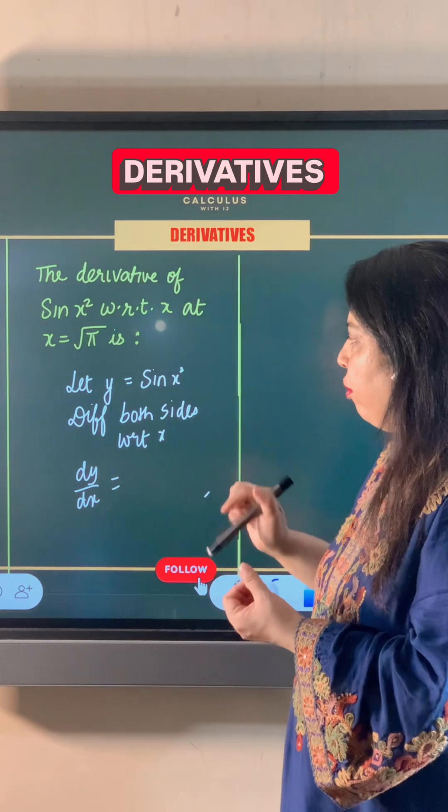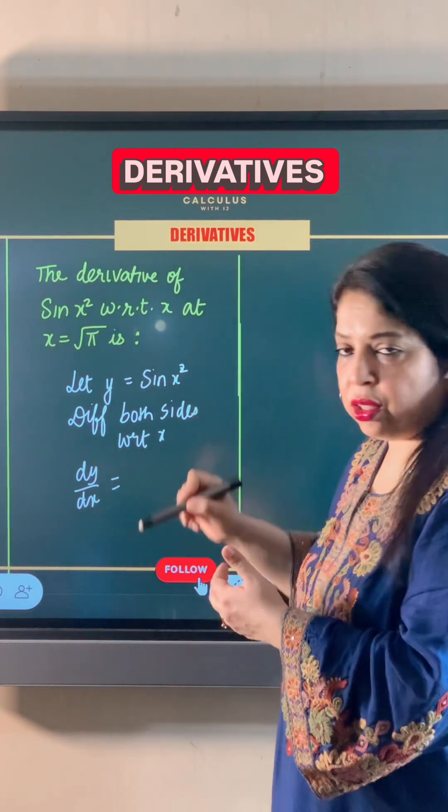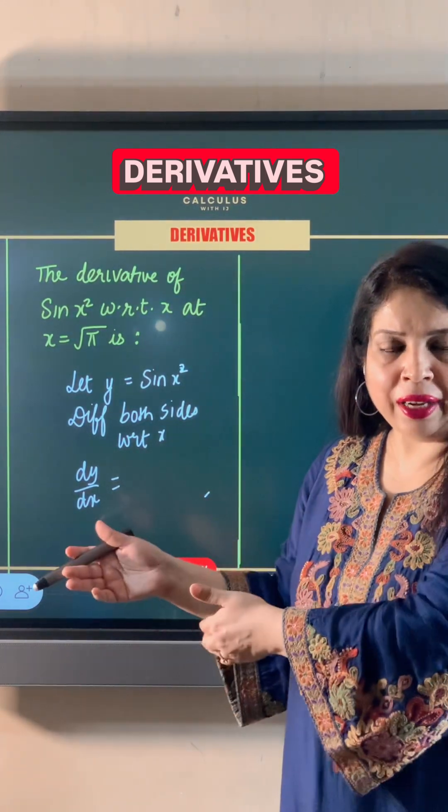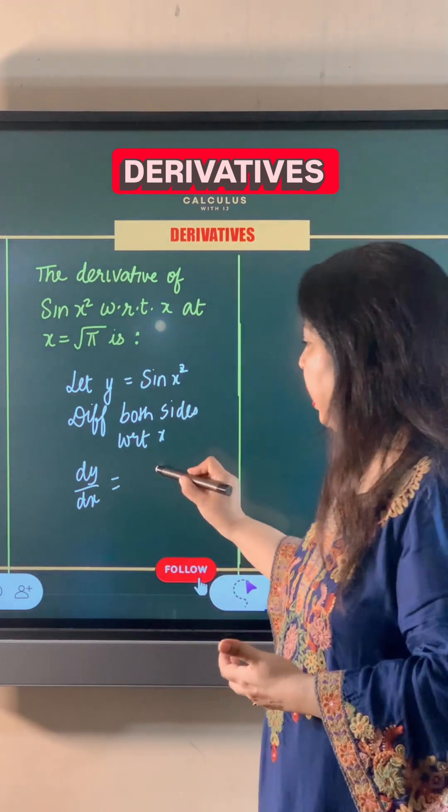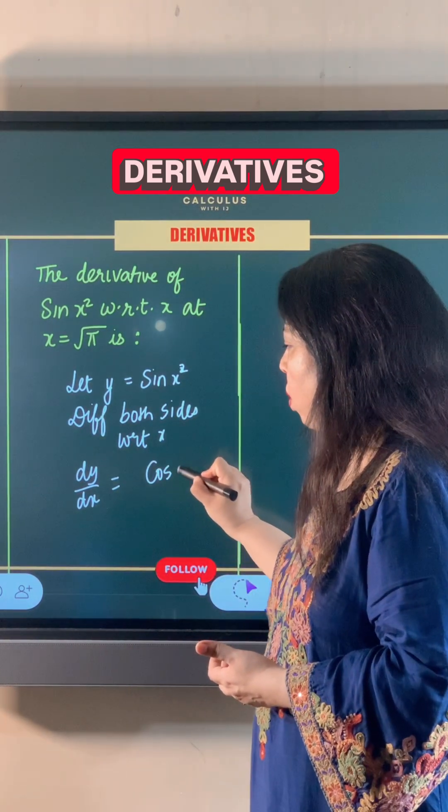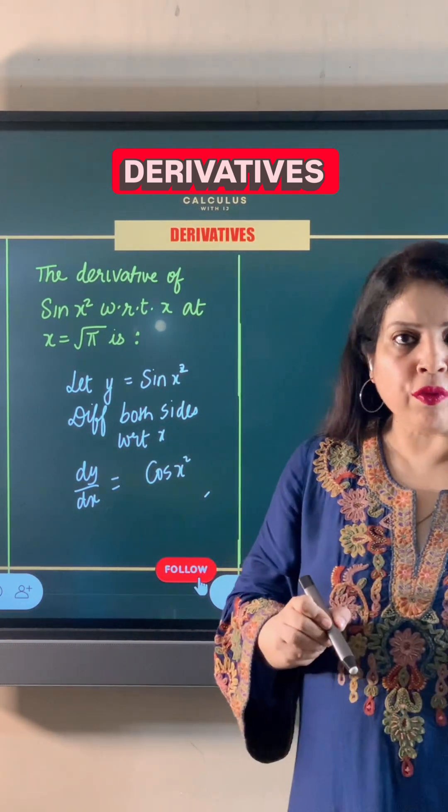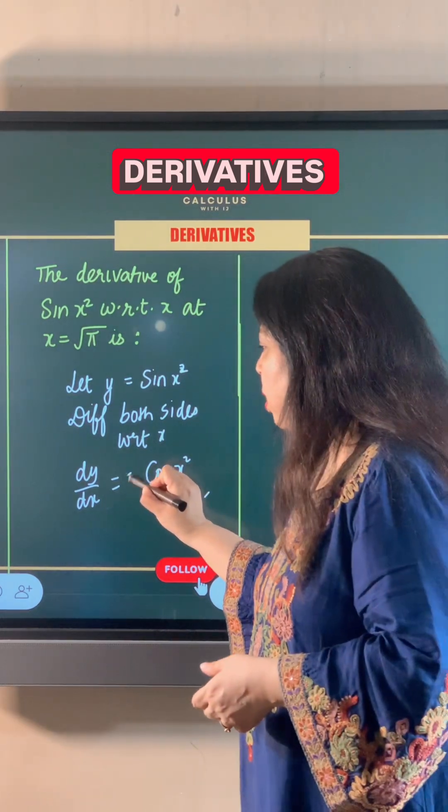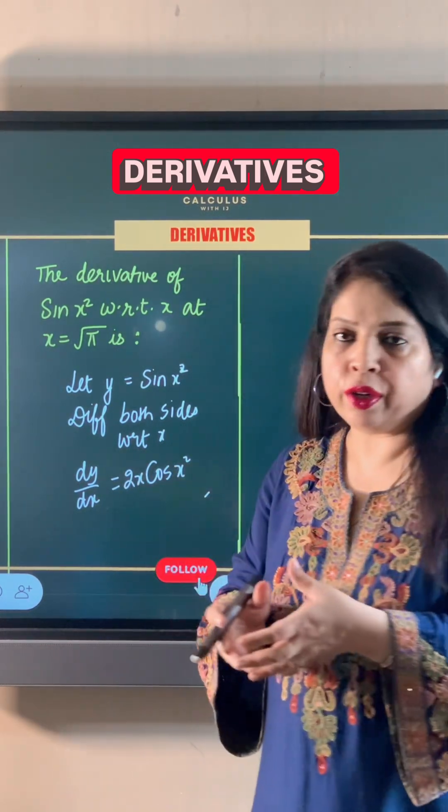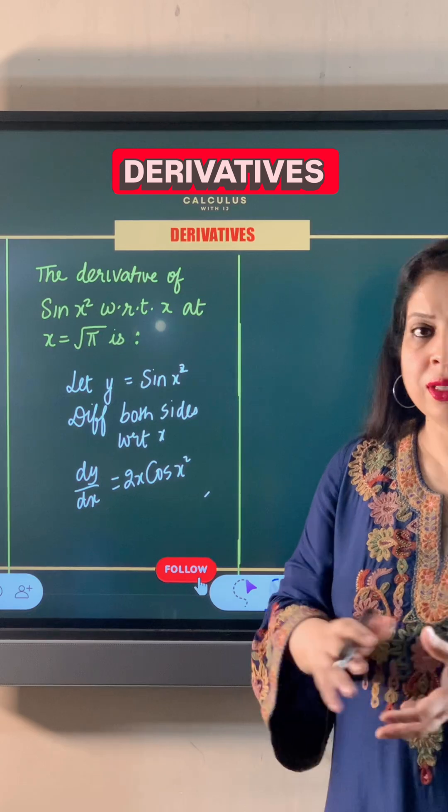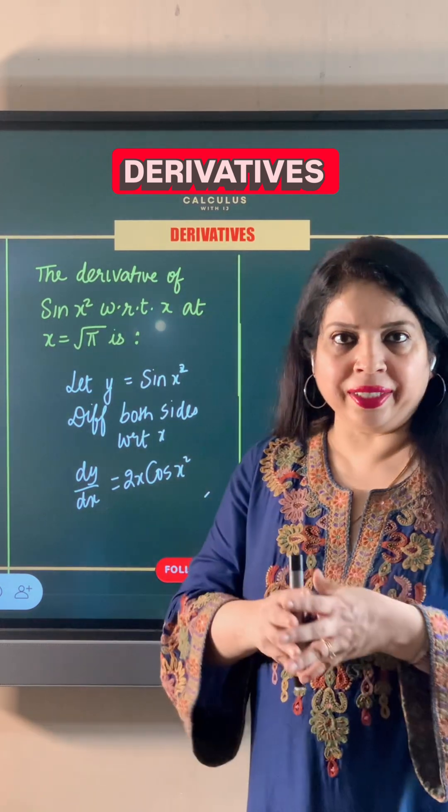So its complete derivative will be derivative of sin x² along with derivative of x². Derivative of sin x² is cos x². Now derivative of x² is 2x. So dy/dx, or derivative of y with respect to x, is 2x cos x² in this case.